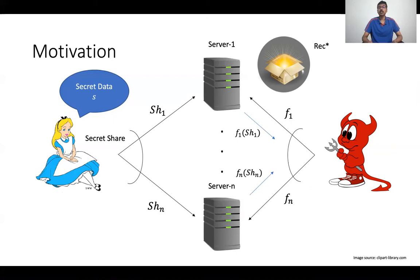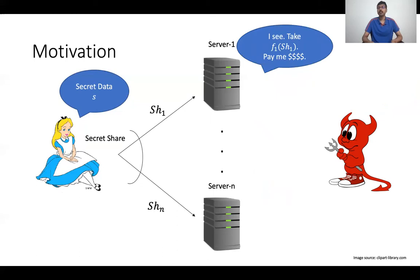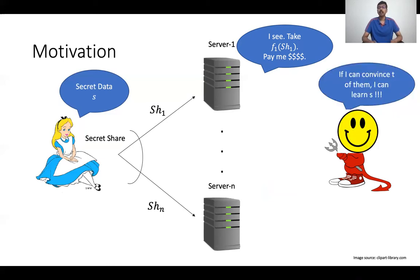These functions could be cleverly designed so that they could remove all the identifying information inside the shares, leaving only the essence of the share. And the adversary promises the following: even if Alice gets hold of these collector functions f1 up to fn, as well as the collected shares fi(share_i) and the reconstruction box, Alice will not be able to prove in the court of law that one of the servers indeed cheated. In other words, there is no way that Alice could trace a cheating server. And any rational server would send fi(share_i) and collect the monetary reward. If the adversary is able to convince at least t of these servers to send the shares, then it can learn information about the secret.